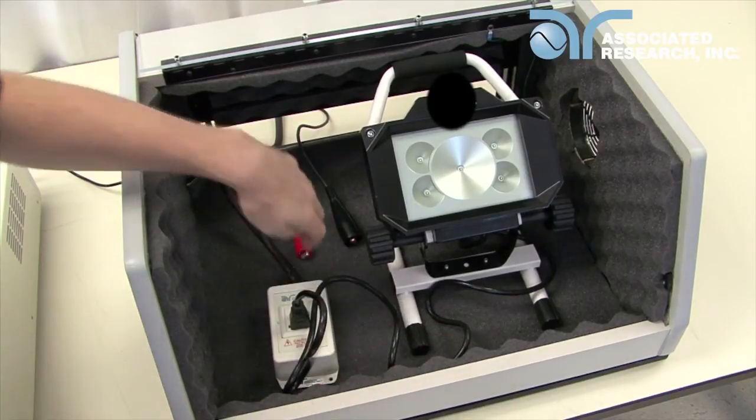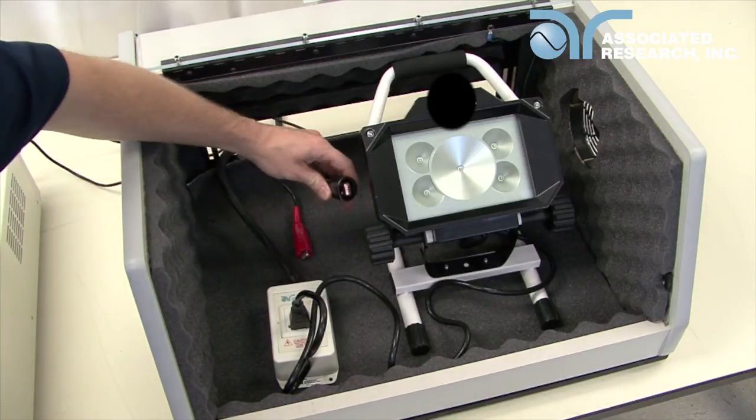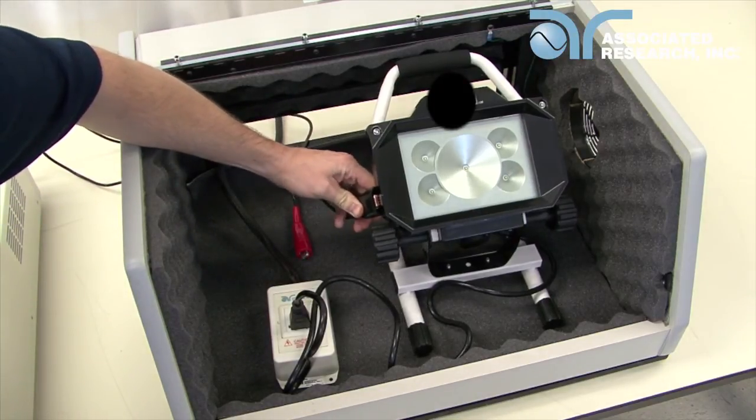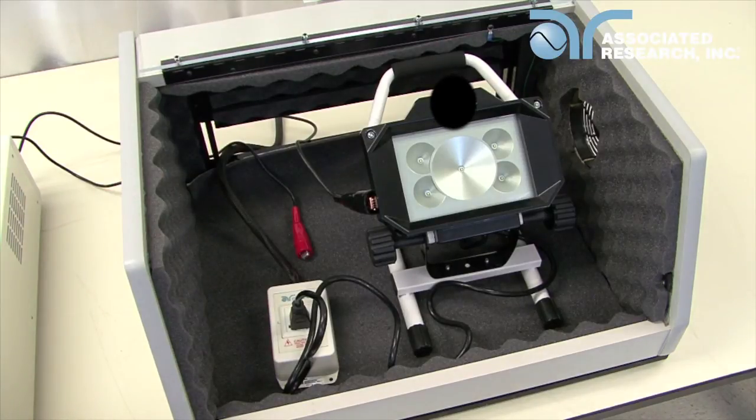If you're running high pot or ground bond testing in your test sequence, as well as line leakage and run testing, connect the case lead to a metal chassis point on your DUT. This will act as the return point for high pot, insulation resistance, continuity, and ground bond testing.